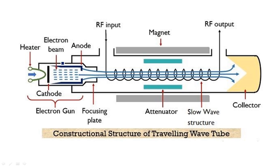Looking at the TWT constructional diagram, the first component is the electron gun. There is a heater element and a beam of electrons — the heater element is part of the electron gun. When it is energized, a beam of electrons is transmitted through the cathode. The cathode and anode are on opposite sides, and collimating or directing plates focus the beam of electrons completely in the forward direction.